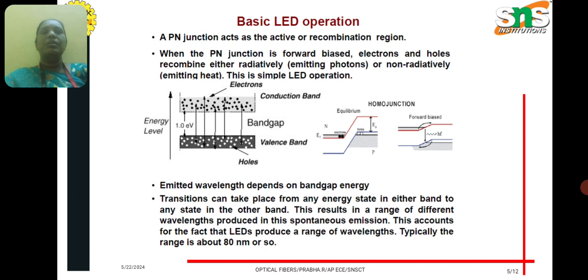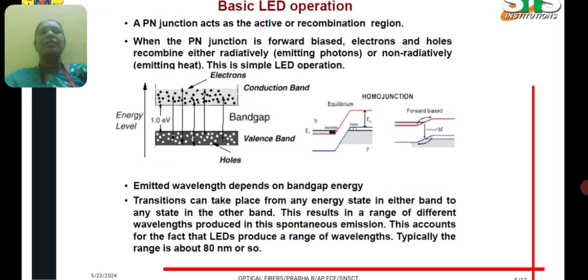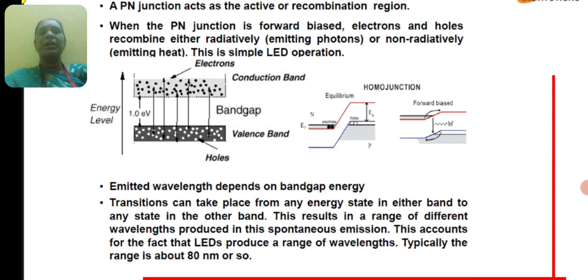The basic LED operation involves a P-N junction and an active region or recombination region. When the P-N junction is forward biased, what happens is...